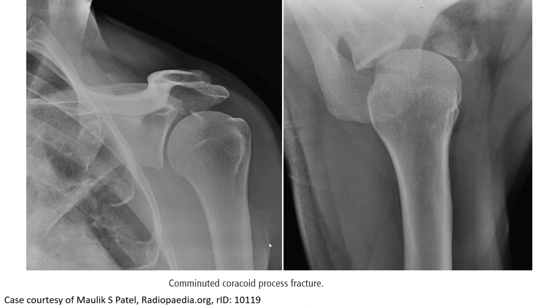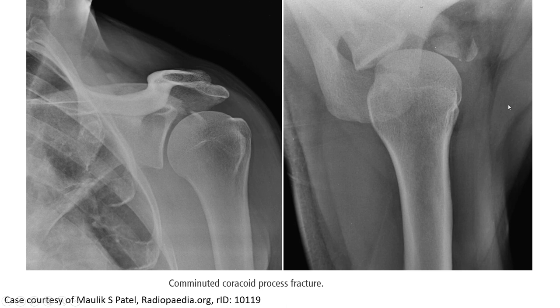This is an example of a coracoid process fracture. We are unable to identify clearly the fracture on the frontal view, but we can still see the fragmentation and lucent fracture line. However, it is seen clearly on the axial or lateral shoulder view across the coracoid.